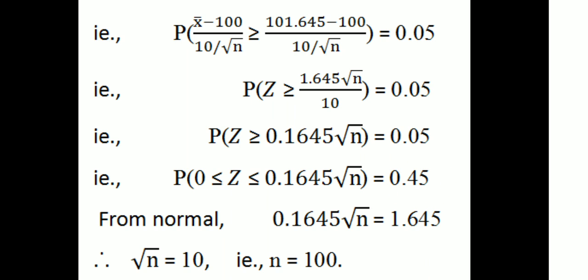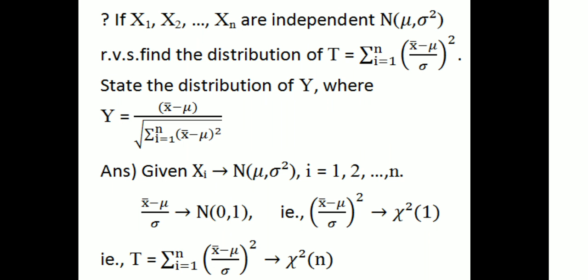From the standard normal table, we equate: 1.645 × √n / 10 = 1.645, giving √n = 10, therefore n = 100. The sample size n is equal to 100.